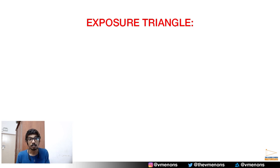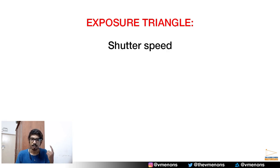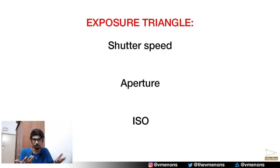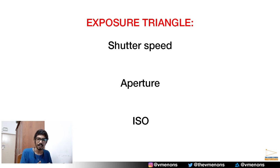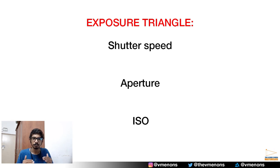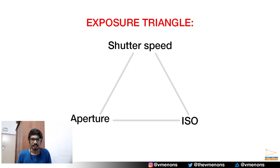In a camera there are three settings which help you decide the right exposure to take a picture. Those three settings are shutter speed, aperture, and ISO. These three settings are interconnected and dependent on each other — changing the value of one setting will require you to change the other two, so you have to find the perfect balance between all three. Since they are all interconnected, it is drawn as a triangle and therefore called the exposure triangle.